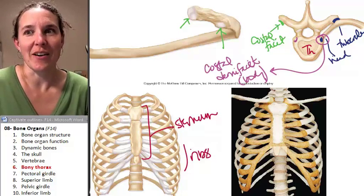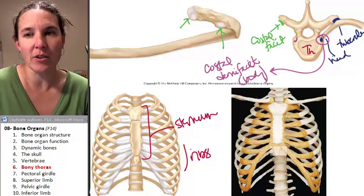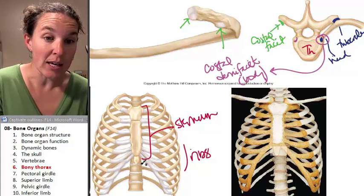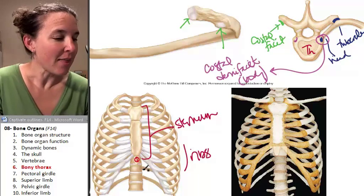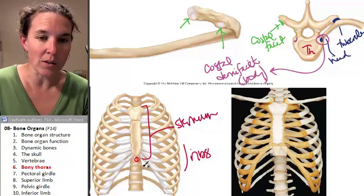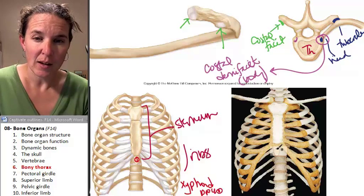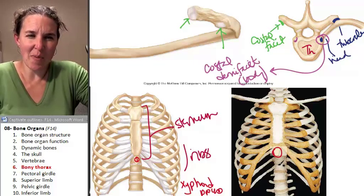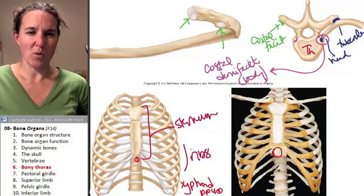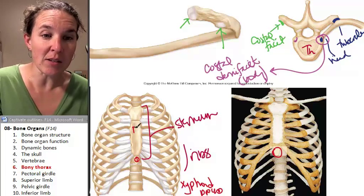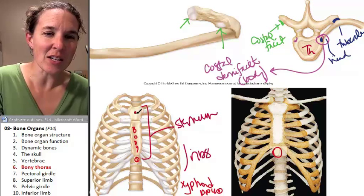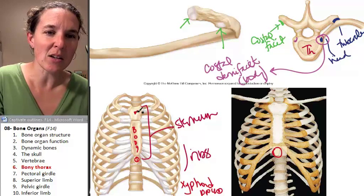The sternum is pretty straightforward. We have three sternum parts to know. First is this tiny little piece down here called the xiphoid process — it hangs down and you can palpate it if you grab your sternum. This is the body of the sternum. And the top piece is called the manubrium.